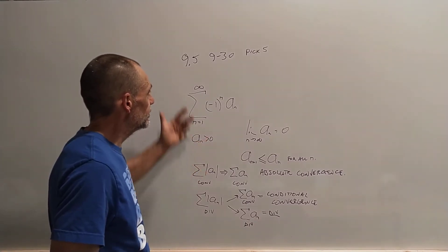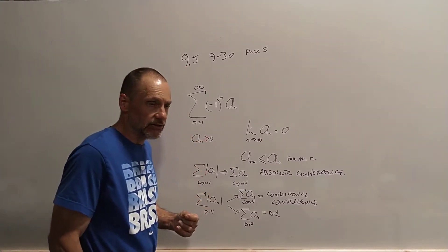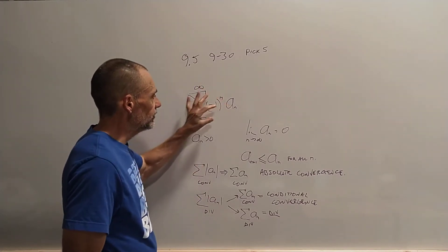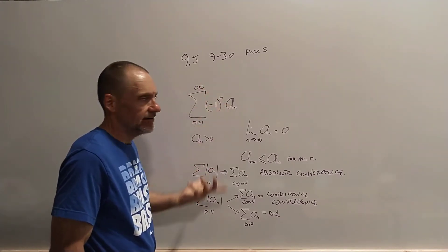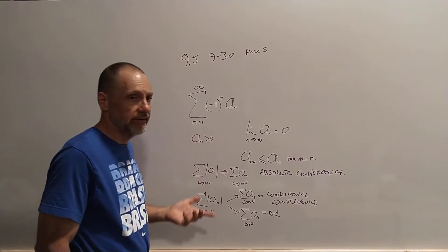What this section is about, 9.5, is the alternating series test. Now, you know, this is what an alternating series looks like. It has this negative 1 to the n in it, or something equivalent to that.